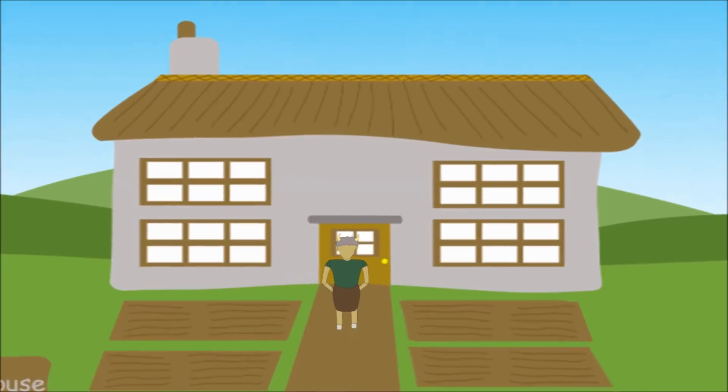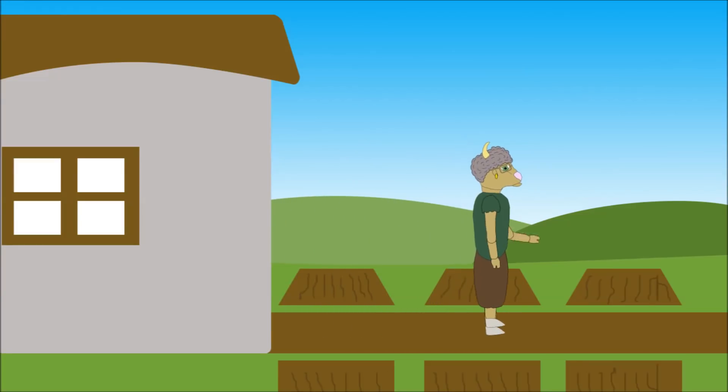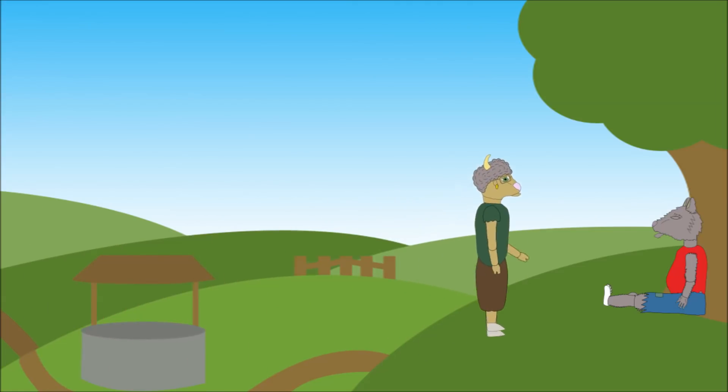Mother Goat returned home, but she had no children to greet her. She heard a cry and found her youngest child hiding. She was so angry she stormed into the fields to find the wolf. The wolf was sleeping under a tree with his belly rounded and full.